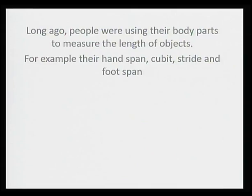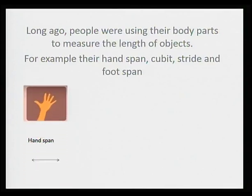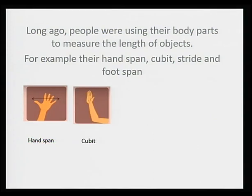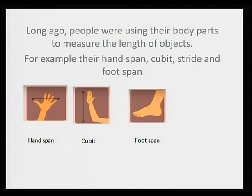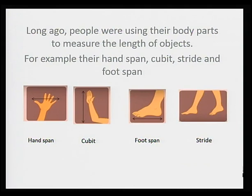For example, people were using the handspan, the cubit, the foot span, and the strides. However, these ways of measurement consisted of lots of constraint and inaccuracy, especially because not everyone has the same body measurement.